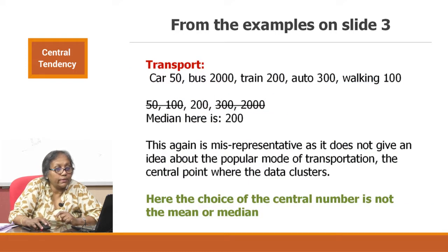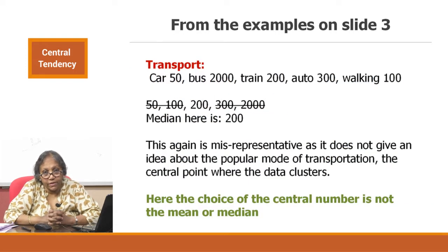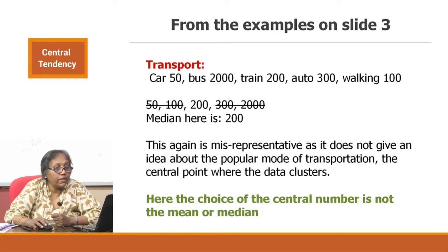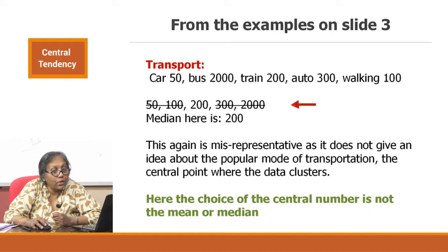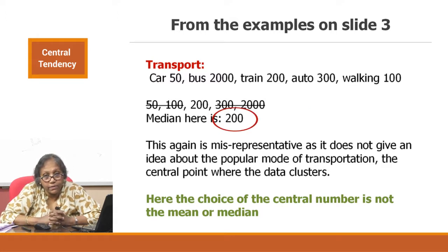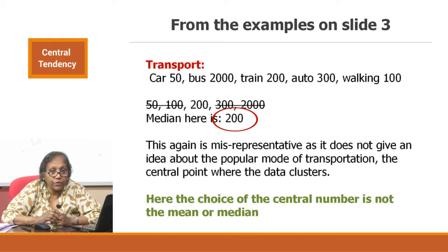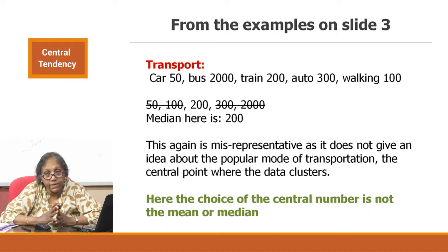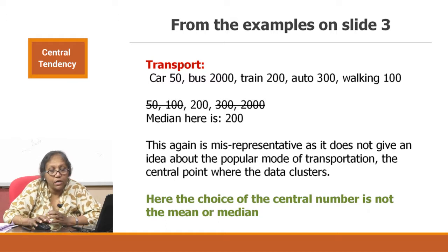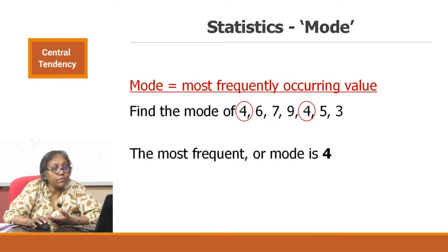Now we look at the transport example. If we arrange the numbers in numerical order and remove the upper and lower ends, we are left with 200. But is 200 the point around which the values are clustering? Not really. So median is also not the appropriate option to find the central point here. There must be some other mechanism — and that is the mode.